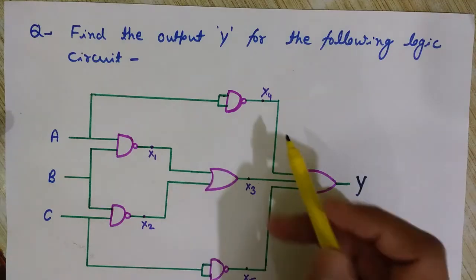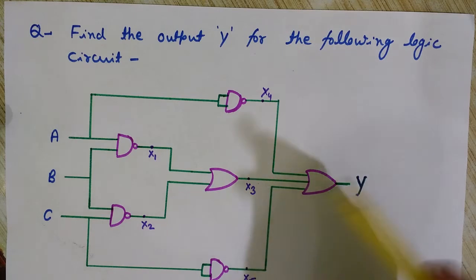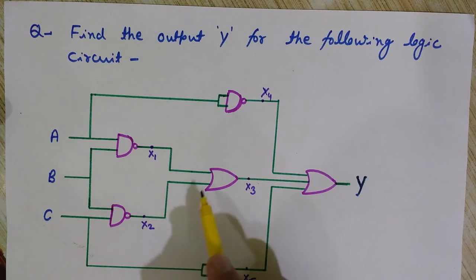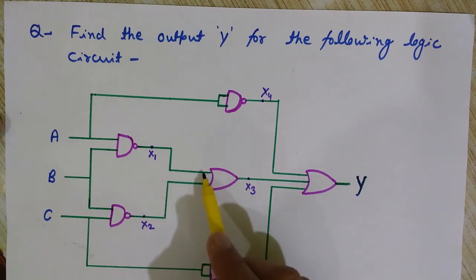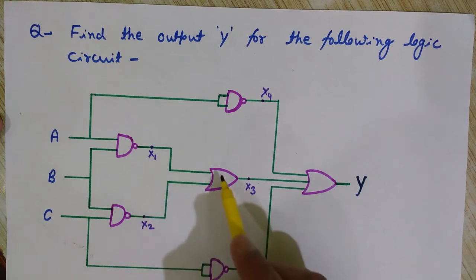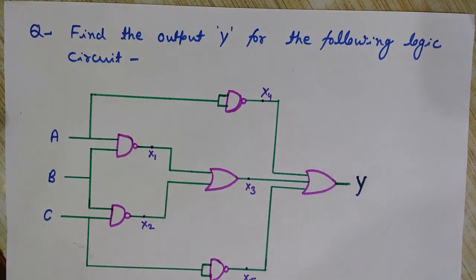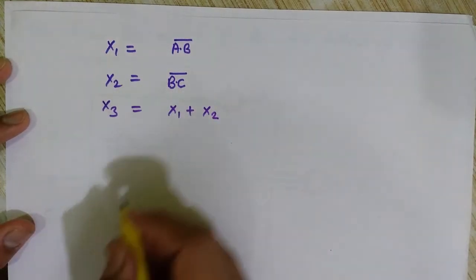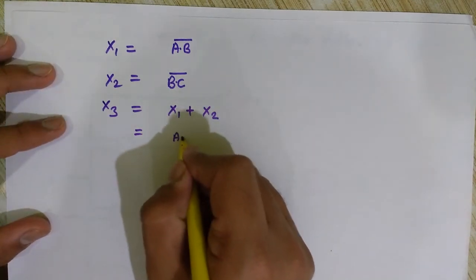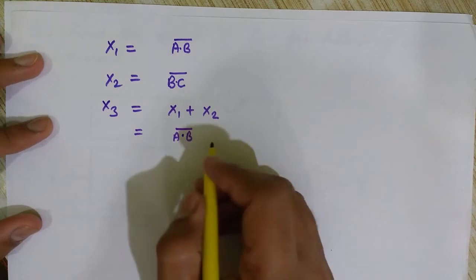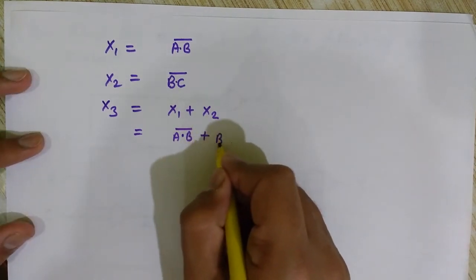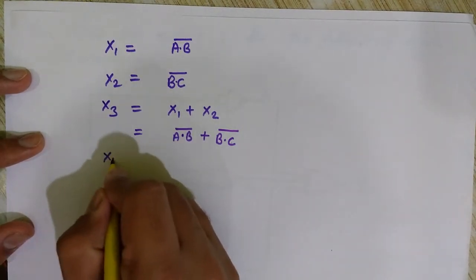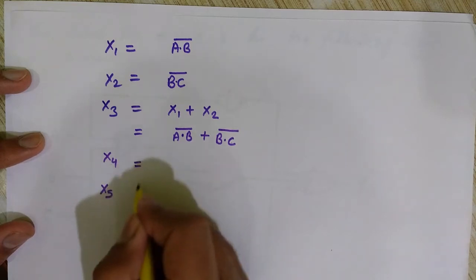Now we calculate x3. x3 is just x1 OR x2 — it is the OR operation of the two inputs x1 and x2. So x3 = x1 + x2. Substituting: x1 is Ā·B̄ ... actually x1 is (A·B)̄ which equals Ā+B̄, and x2 is (B·C)̄ which equals B̄+C̄.